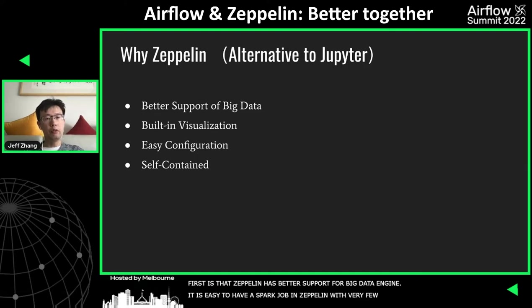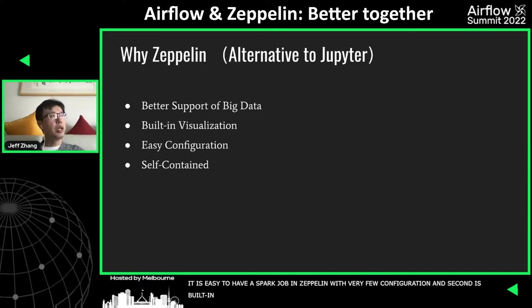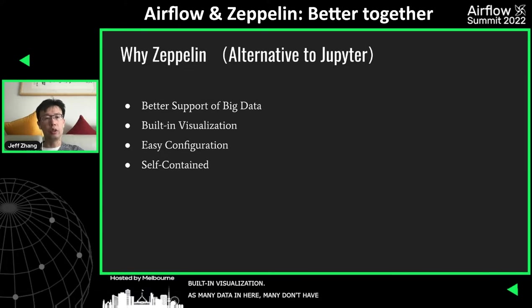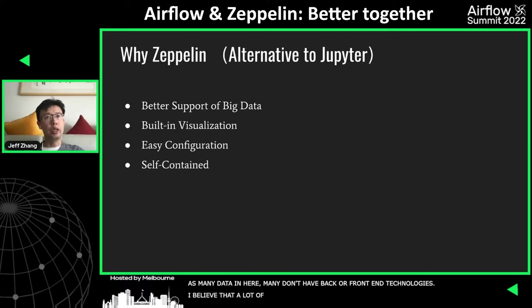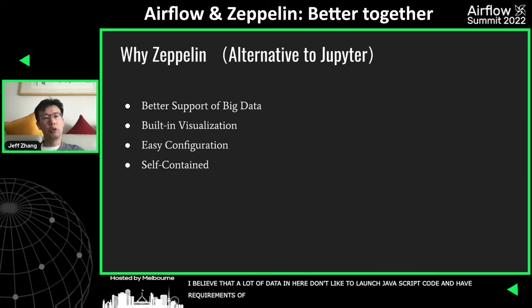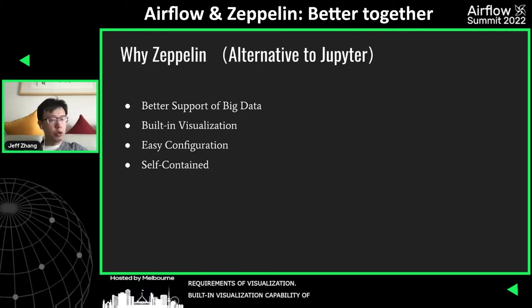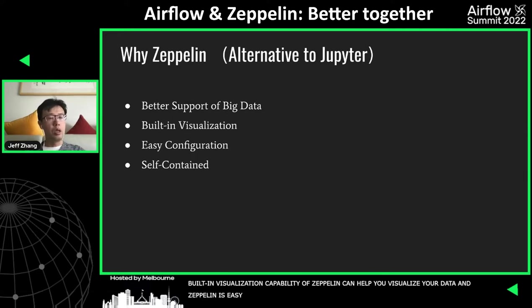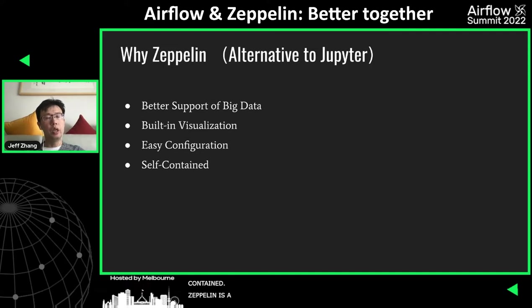The second reason is the built-in visualization. Many data engineers don't have front-end knowledge and don't like to write JavaScript code, but they have requirements for visualization. The built-in visualization capability of Zeppelin can help you visualize your data. The third reason is easy configuration — it's pretty easy to configure your Spark, Flink, or Hive job in Zeppelin. The fourth reason is that Zeppelin is self-contained, so you don't need to install any extra dependencies. If you're using Jupyter and want to run a Spark job, you need to depend on other things like a Spark kernel or a Livy server.